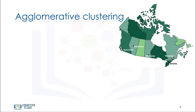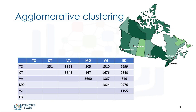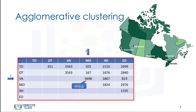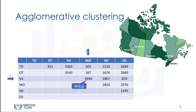Let's look at a sample of agglomerative clustering. This method builds the hierarchy from the individual elements by progressively merging clusters. In our example, let's say we want to cluster six cities in Canada based on their distances from one another: Toronto, Ottawa, Vancouver, Montreal, Winnipeg, and Edmonton. We construct a distance matrix at this stage, where the number in row i, column j is the distance between the i and j cities. This table shows the distances between each pair of cities.